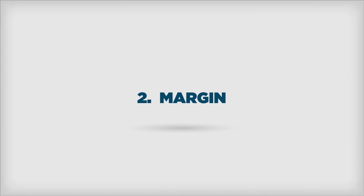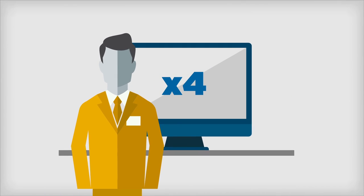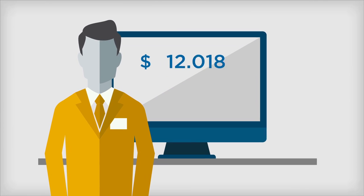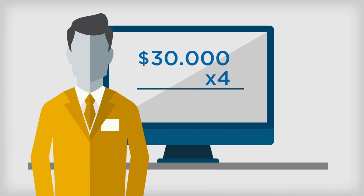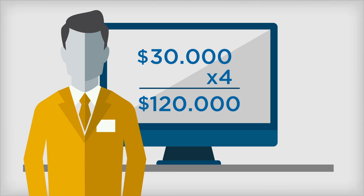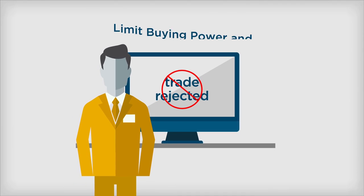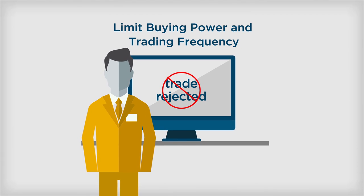Speaking of margin, an equity trader can only trade up to four times their maintenance margin excess on an intraday basis. So if they have $30,000 maintenance excess available, they could only trade up to a value of $120,000. Exceed this amount and margin calls may further limit buying power and trading frequency.